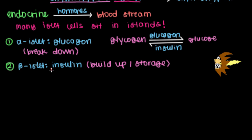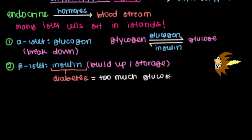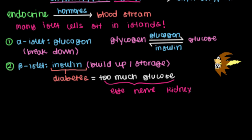Perhaps the most important thing about insulin is that it is the hormone responsible for the disease known as diabetes. Diabetes causes damage to our bodies because we have too much glucose floating around. That happens because insulin is not working properly — we're not building up and storing glucose in glycogen like we should. Instead it's running all over the body, and because of that we have eye, nerve, and kidney disease — that's the catchphrase used in medicine to describe diabetes.